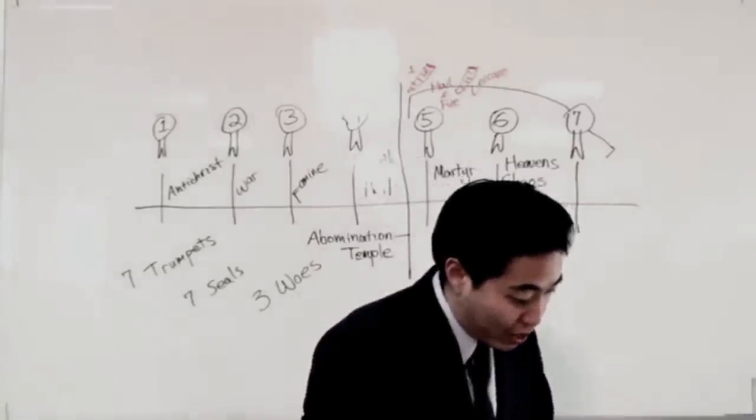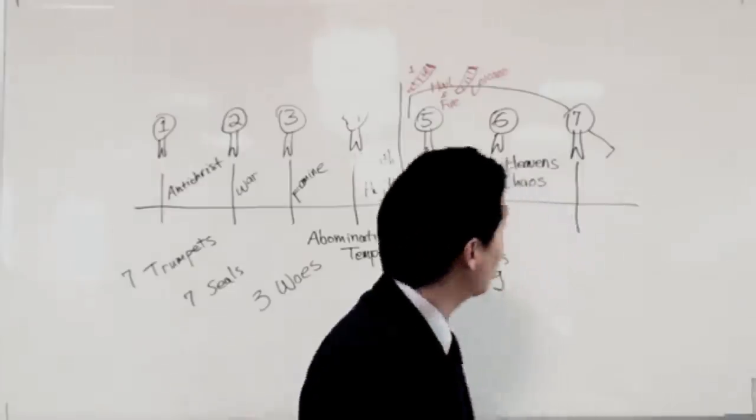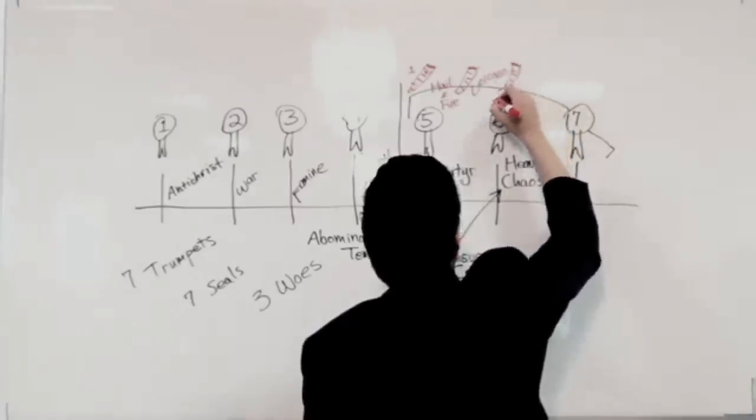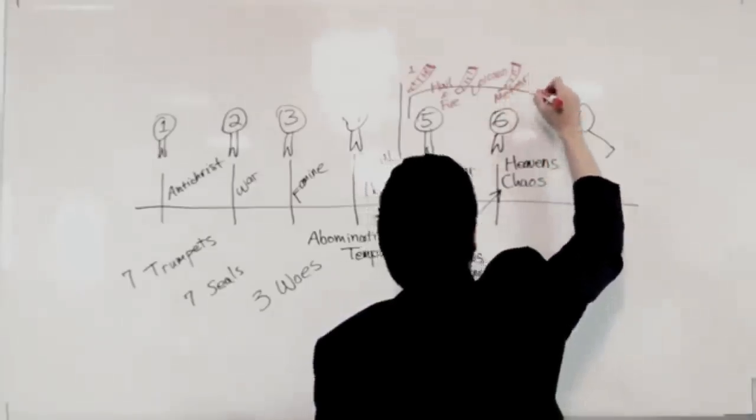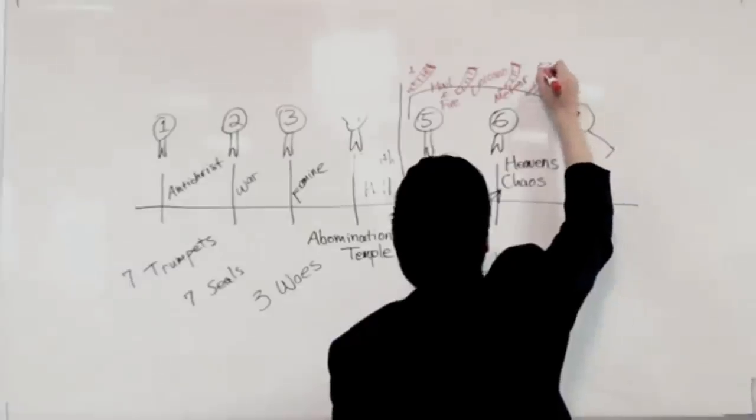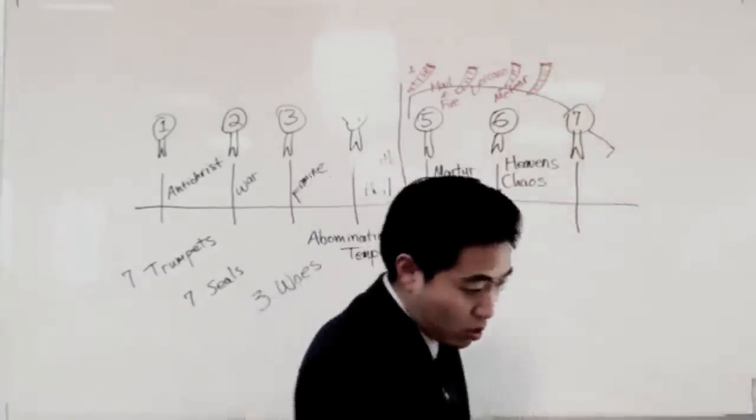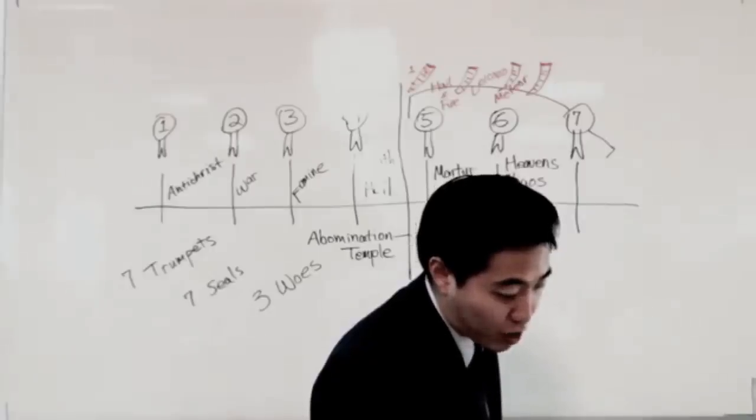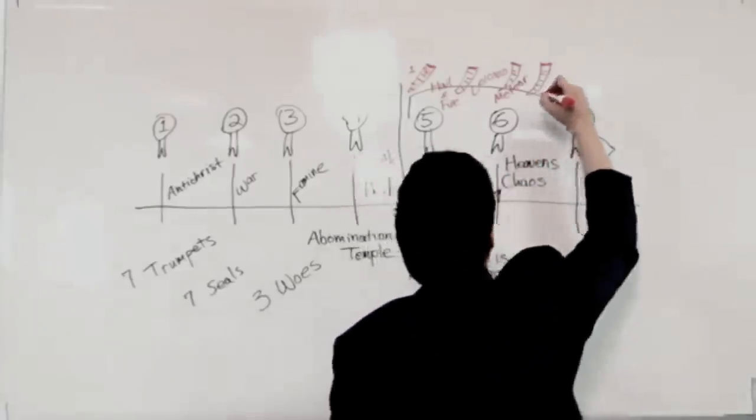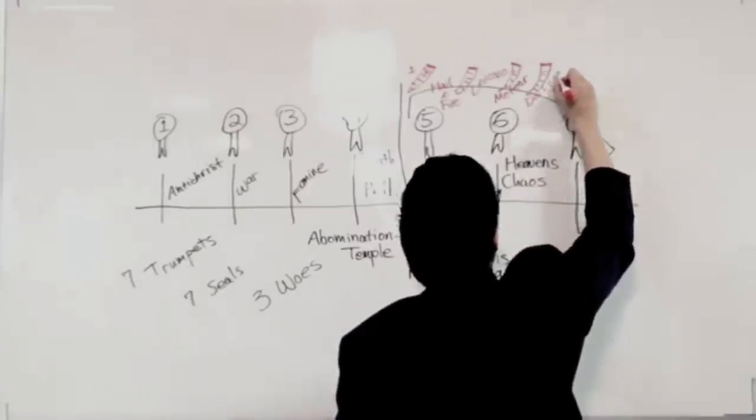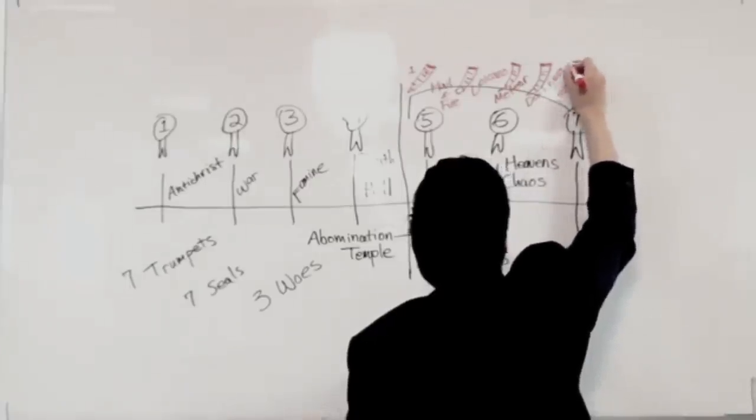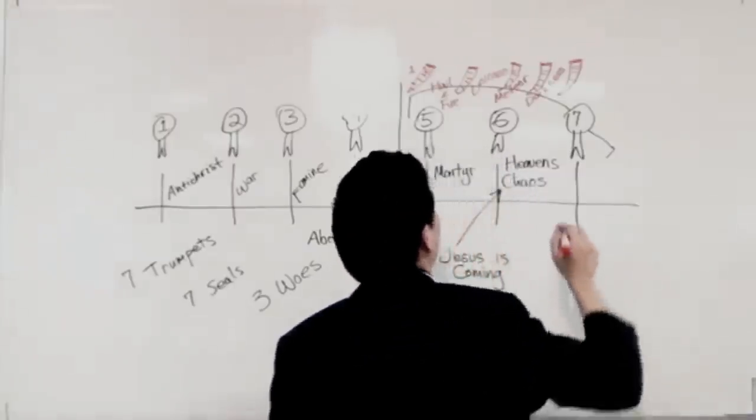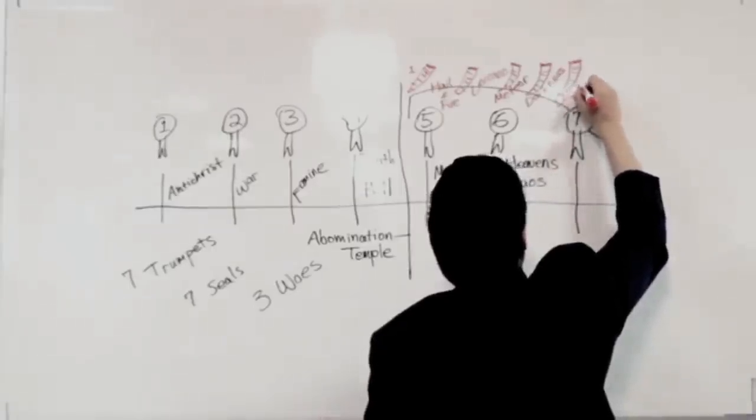Alright, the third angel. So, you'll notice that wormwood is falling. So a meteor hit. So, alright, the fourth one right here. You'll notice at verse 12, third part of the sun smitten, third part of the moon, third part of the stars. So there is darkness. Four, five. Remember the fifth one at chapter nine? It was referring to those locusts.